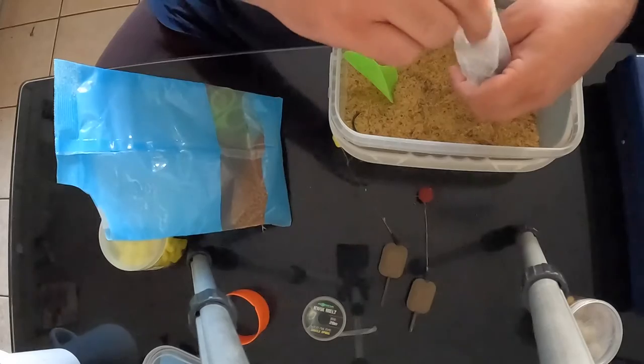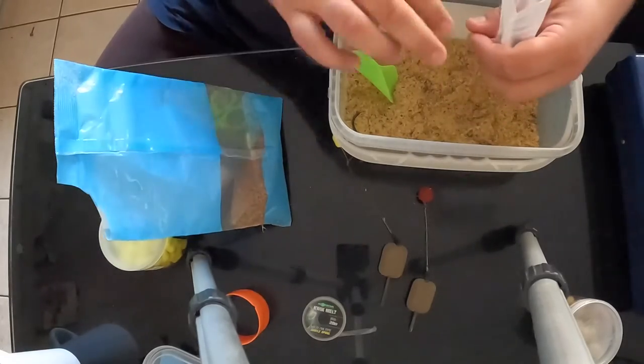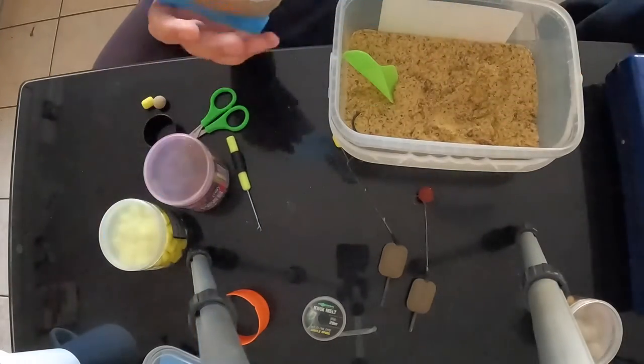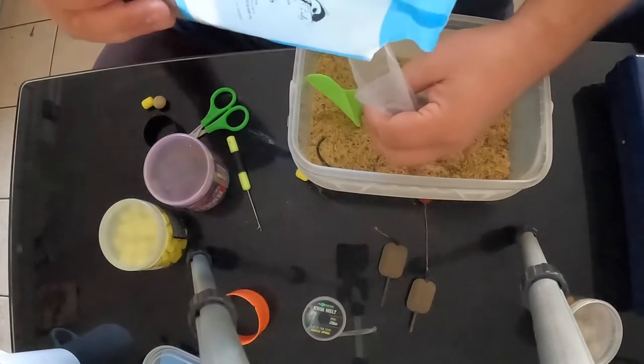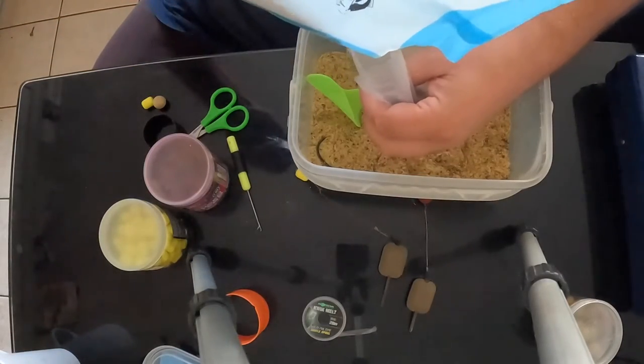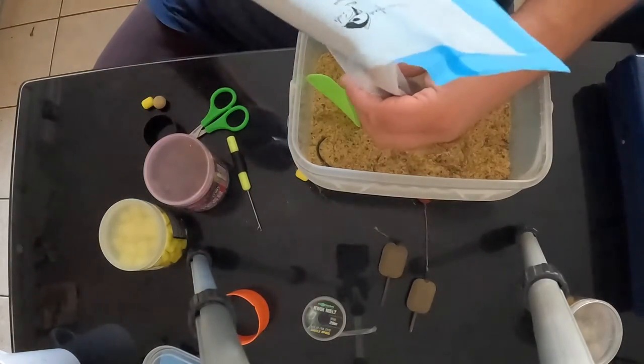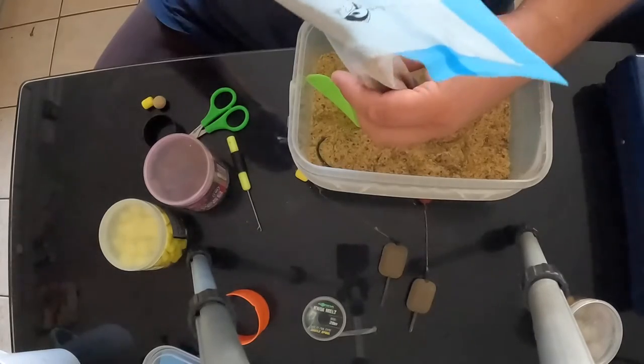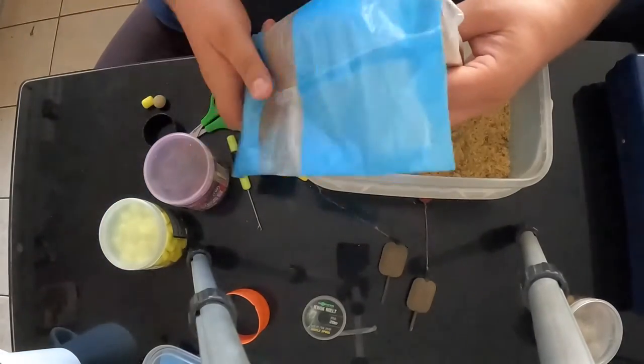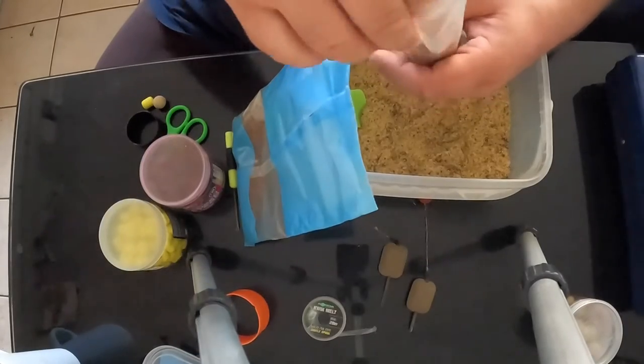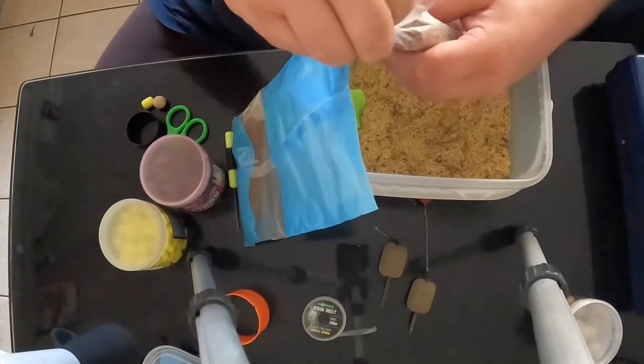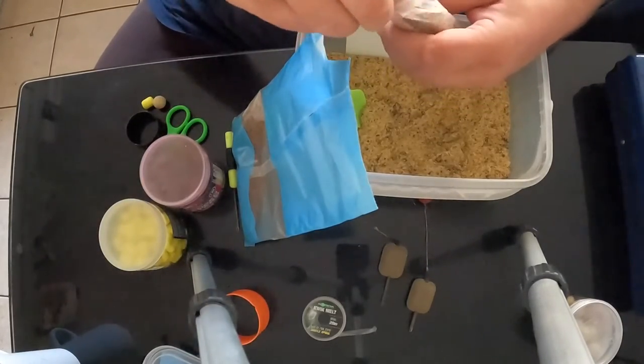Once you're happy that your bait's in place, we're just going to fill that bag with micro pellets. I prefer micro pellets to your larger pellets—your four, six, and eight mil—you get a much tighter bag using micro pellets. Just fill your bag until you've covered your lead and just leave in your bag stem.